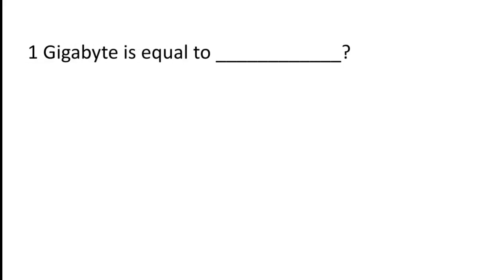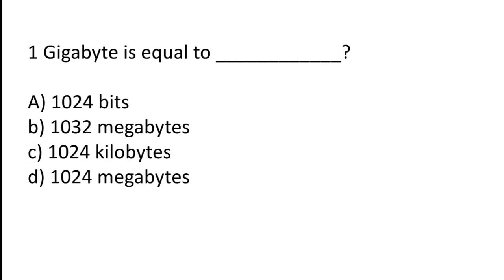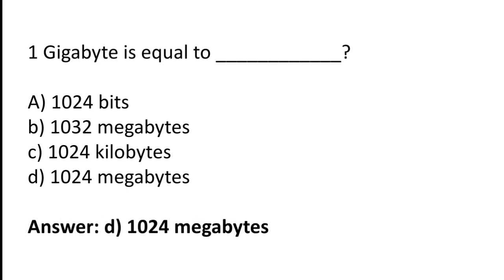1GB is equal to: 1024 bits, 1032 megabytes, 1024 kilobytes, 1024 megabytes. The correct answer is option D — 1GB is equal to 1024 megabytes.